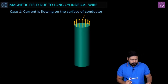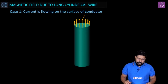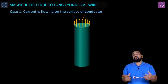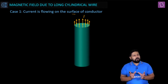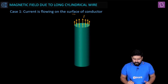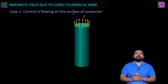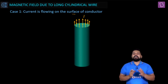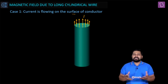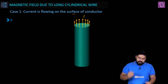Let me show you one situation. The question says: the magnetic field due to a long cylindrical wire. In case one, the current is flowing on the surface of the conductor. Imagine you have a hollow copper wire and all the current is flowing along the surface only. We'll be talking about two different scenarios: one is a point inside the wire, and another is a point outside the wire. Let's see how we apply Ampere's circuit law.